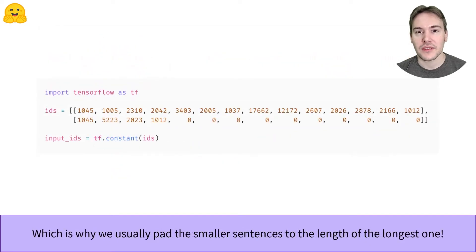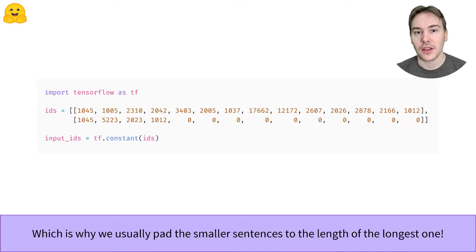One way to overcome this limit is to make the second sentence the same length as the first by adding a special token as many times as necessary. Another way would be to truncate the first sequence to the length of the second, but we would then lose a lot of information that might be necessary to properly classify the sentence.